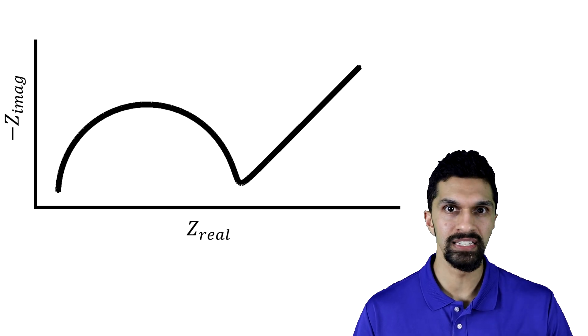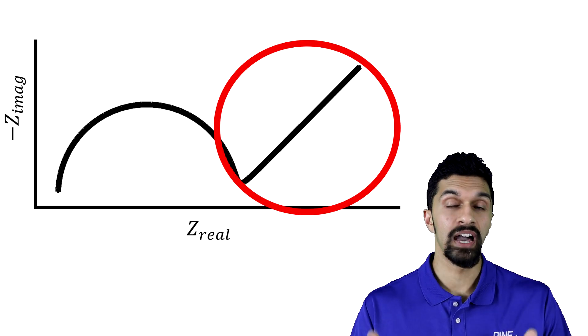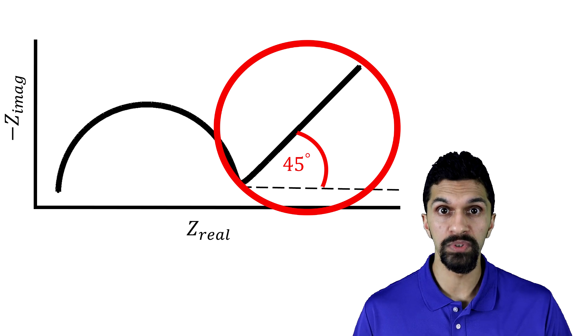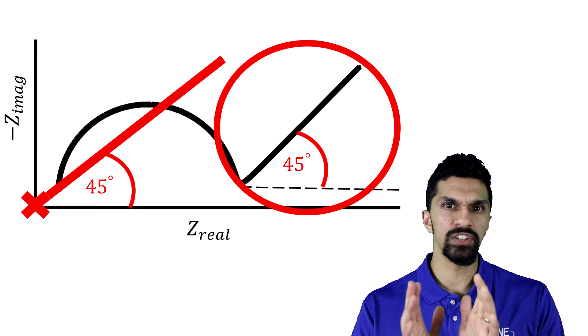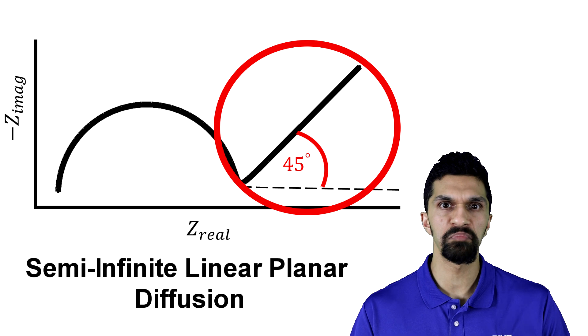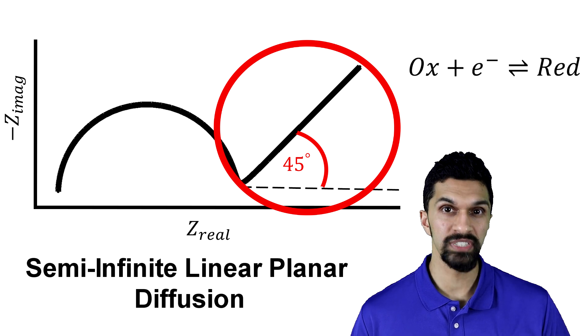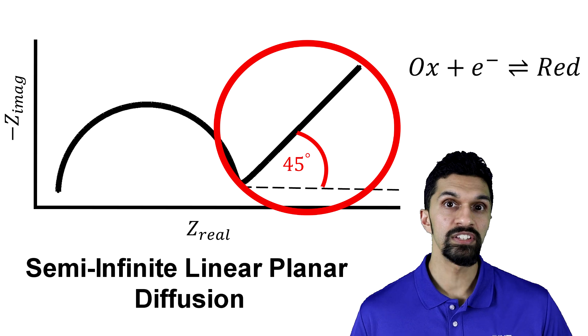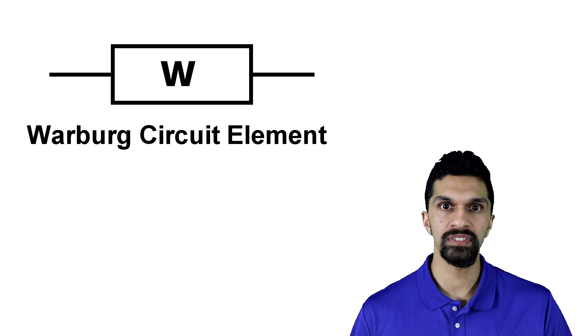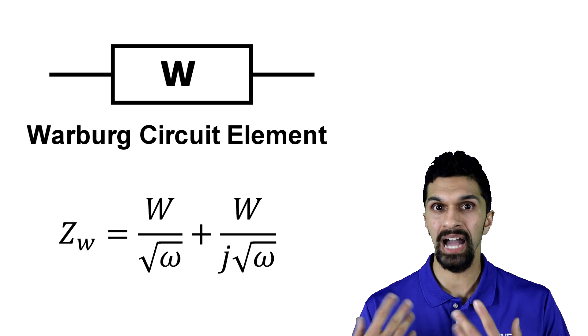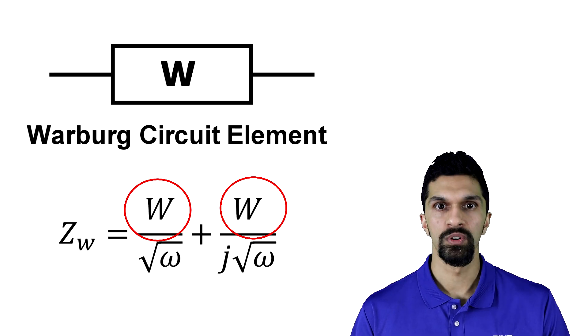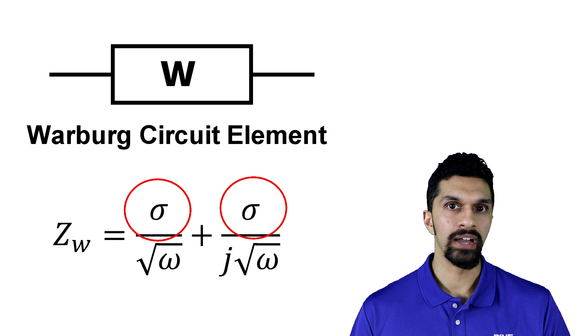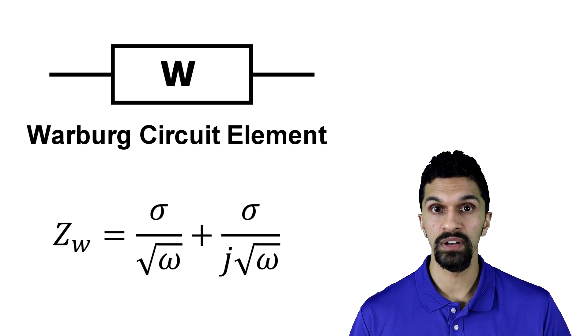Warburg impedance is characterized by this diagonal line in the Nyquist plot. This line has a 45-degree angle with respect to the origin and is associated with the semi-infinite linear planar diffusion of a redox reaction in an electrochemical system. The circuit element used to describe this is called the Warburg circuit element, and it's usually equal to a constant W, or sometimes sigma, divided by the square root of the frequency.